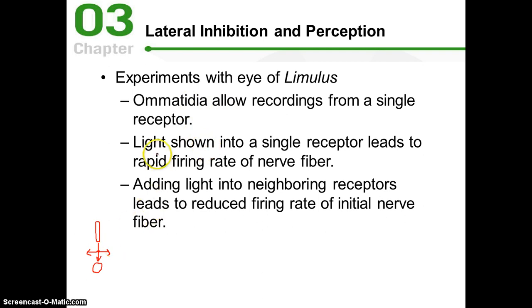Illusions like the Hermann grid seem to possibly be due to something called lateral inhibition, which was first discovered in experiments that were conducted on the eye of the limulus. The limulus is, in fact, a horseshoe crab. The reason that researchers like to do research with something like a horseshoe crab to understand the way the visual system works in humans is because basically it's just easier.